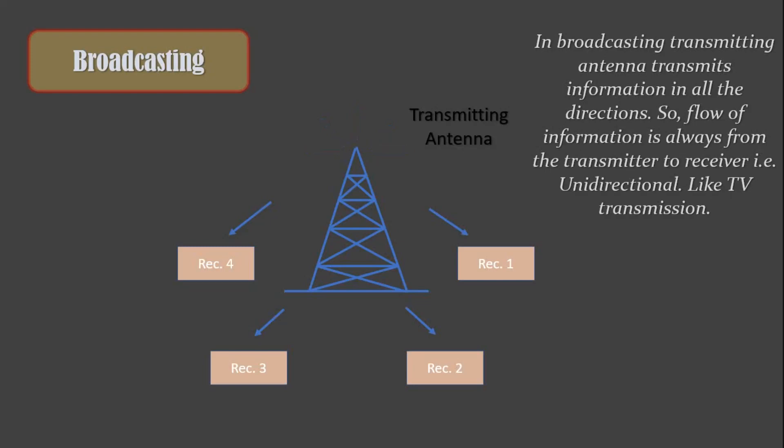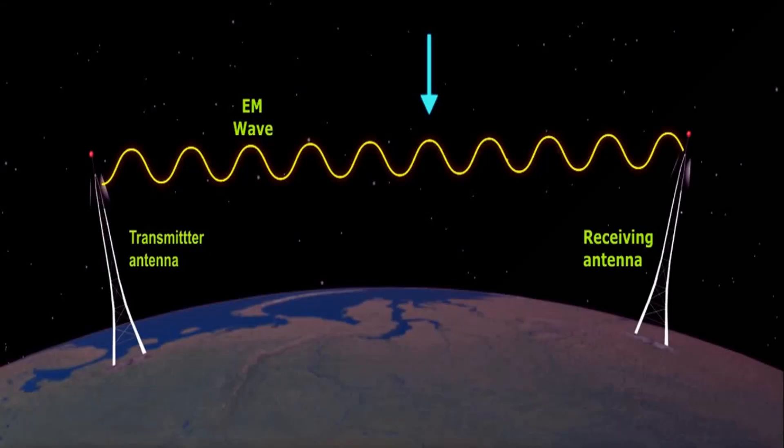As a matter of fact, the message signal should be first converted into an electromagnetic signal before transmission because wireless transmission takes place using the electromagnetic waves.